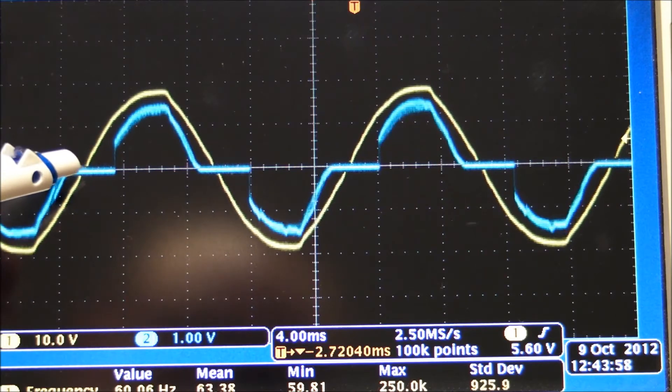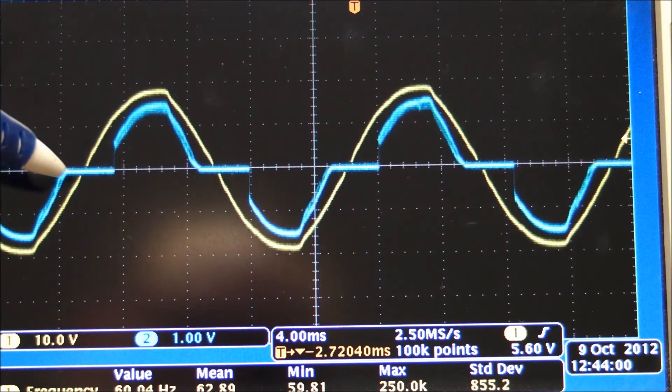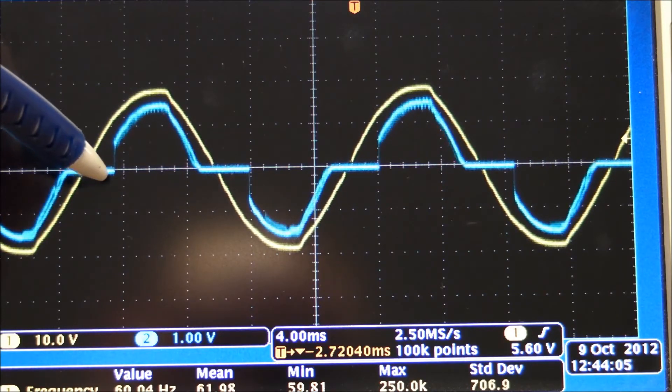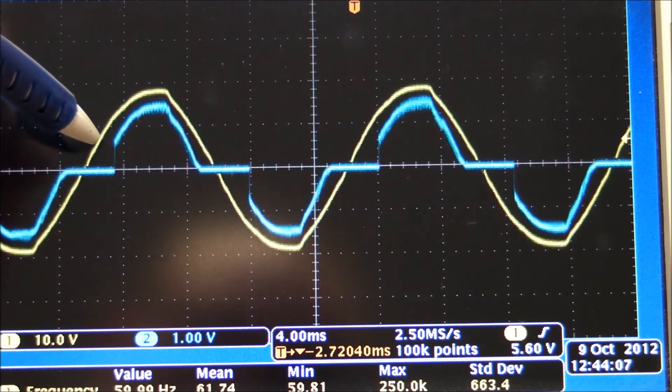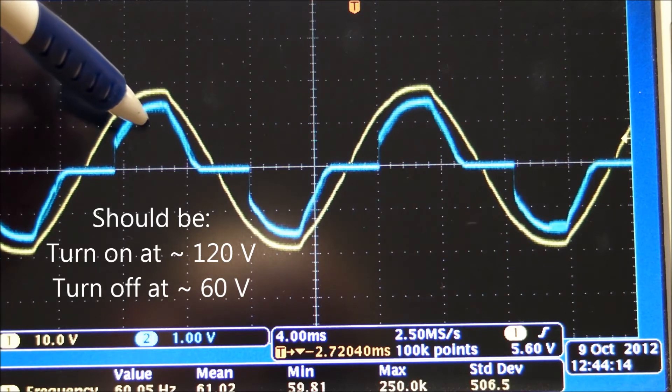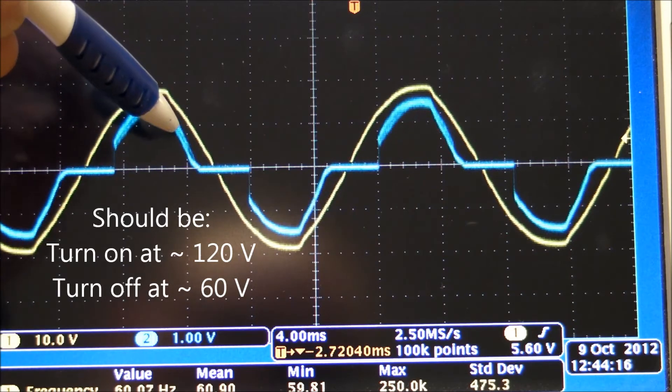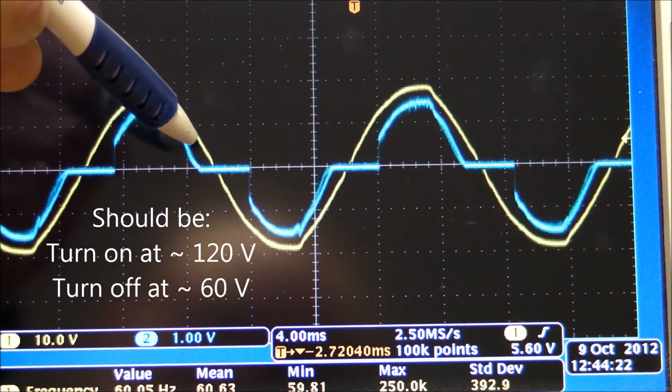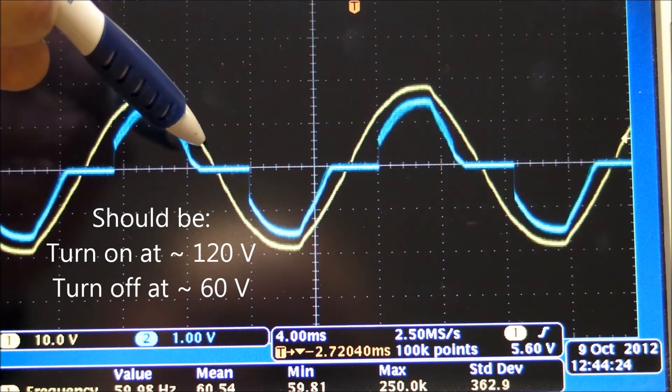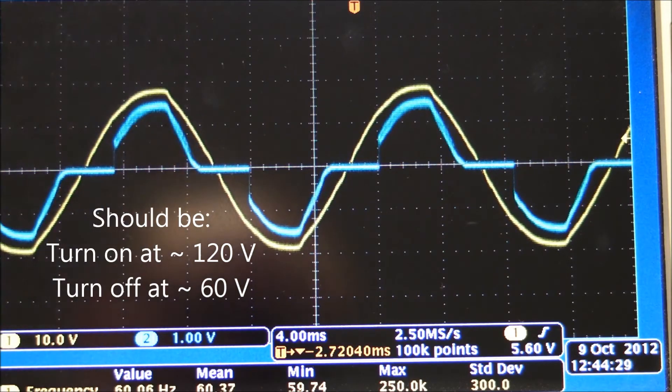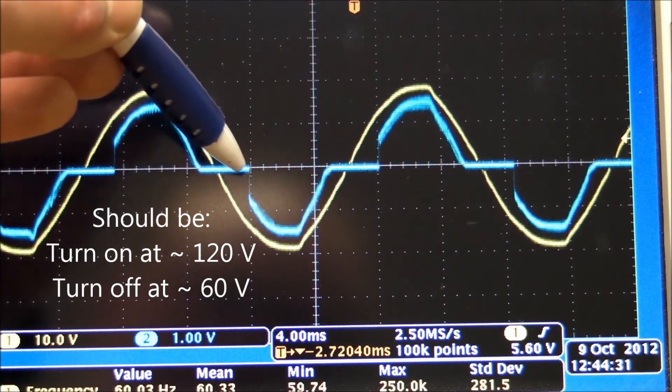The blue trace, which is the current, you can see how it doesn't actually conduct current, remains zero until voltage reaches a threshold of about 60 volts or so. At that point, that's when the current starts flowing when the bulb starts conducting, until the voltage gets below about another 50 or 60 volts or so. When the voltage gets below that, that's when the current turns off until the next cycle when it reaches 60 volt peak.